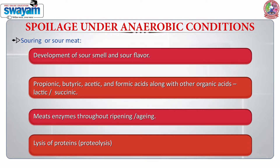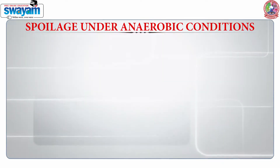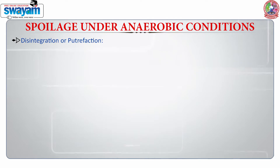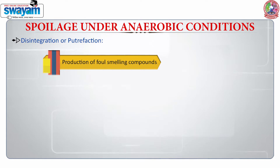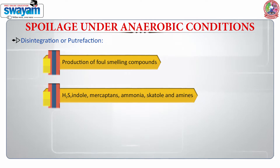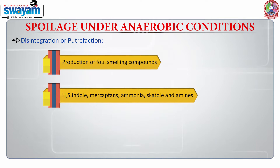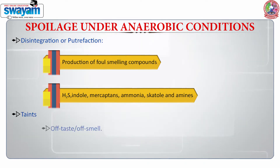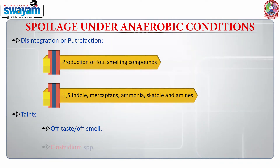Meat also contains enzymes which are acting throughout the ripening and aging process, and these lead to proteolysis — that is the lysis of proteins. When we are talking about anaerobic breakdown, a very important and critical defect is putrefaction or disintegration. This leads to the production of foul-smelling compounds such as hydrogen sulfide, indole, mercaptans, ammonia, skatole and amines. When we see putrefaction happening, we also associate it with taints which are basically of taste or smell, and the species which is implicated is Clostridium.